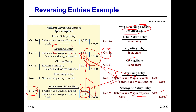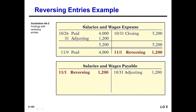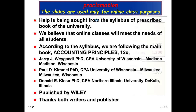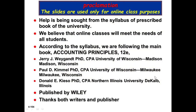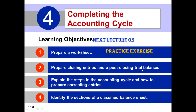The posting with reversing entries shows: paid $4,000, adjusting $1,200, total closing $5,200. The reversing entry of $1,200 and the adjusting entry of $1,200 are the same amount, offsetting each other. The salaries and wages payable account shows reversing $1,200 and adjusting $1,200.